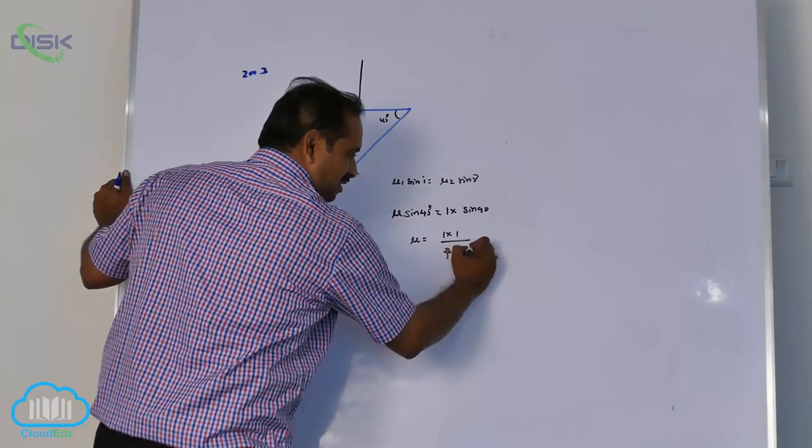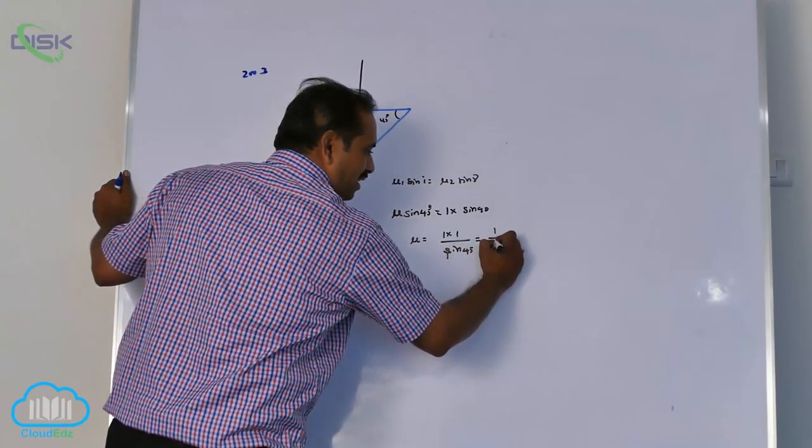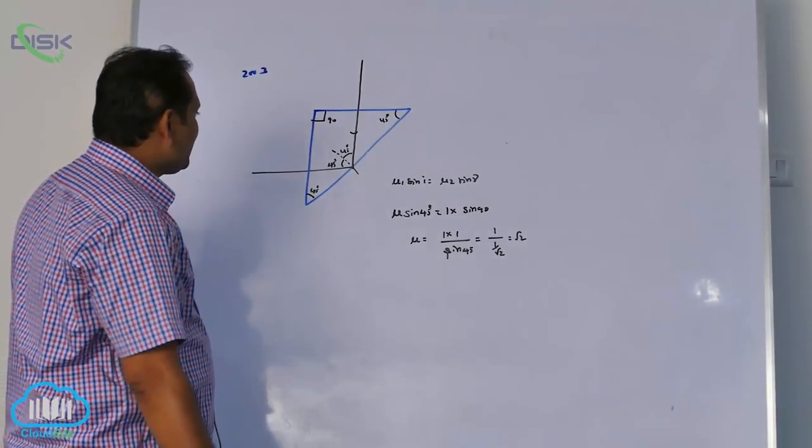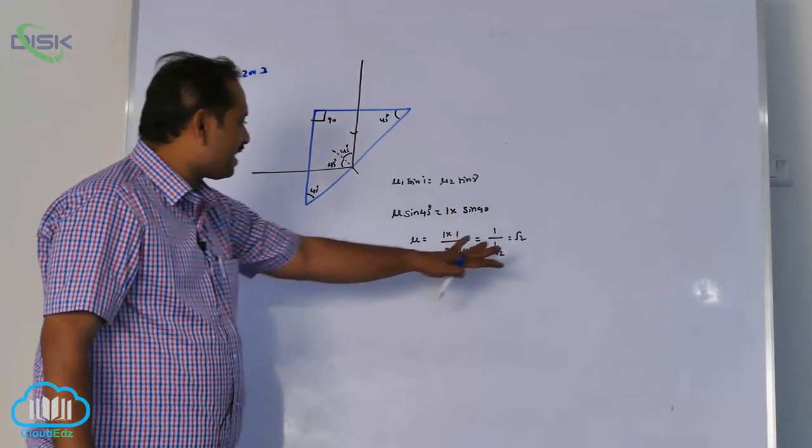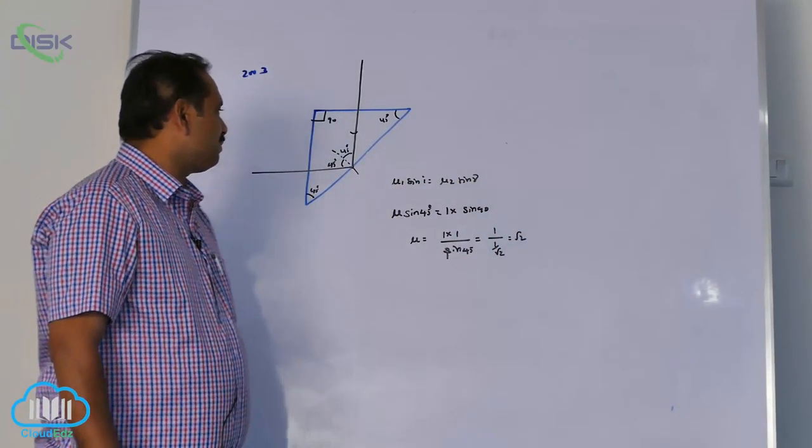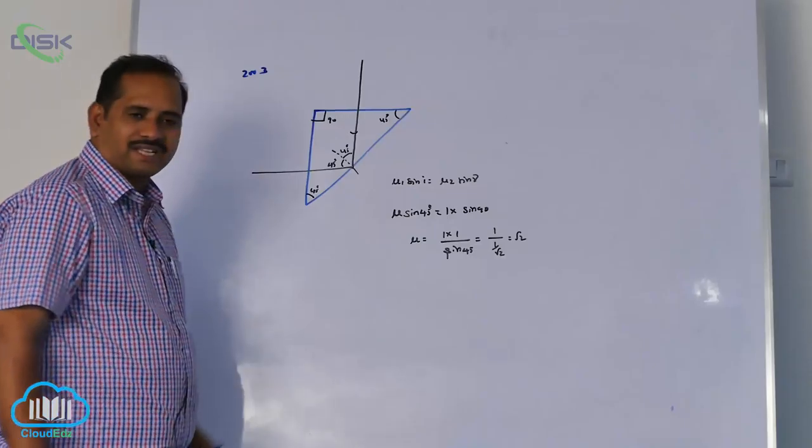That equals 1/(1/√2) = √2. The minimum condition for total internal reflection in a right-angled prism is μ ≥ √2 for the refractive index of the prism.